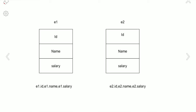The link is established between the structure variable name, followed by the dot operator, and its member name. For example: e1.ID, e1.name, e1.salary. Similarly for the second employee: e2.ID, e2.name, and e2.salary. This is how we access structure members.